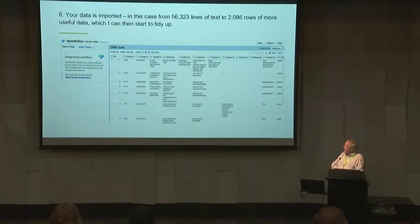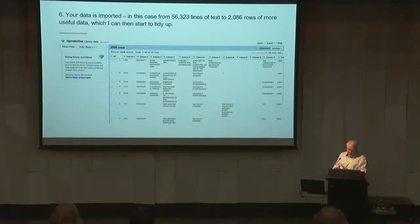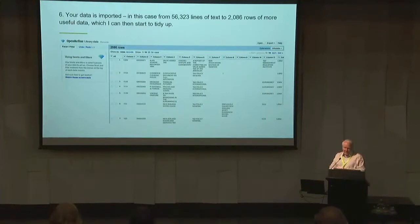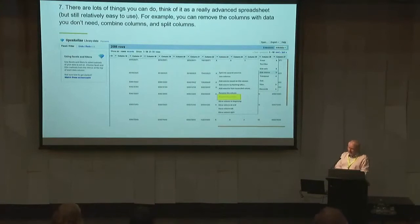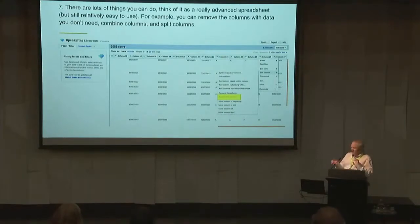We've got some data in here in columns. There are a few problems with some of this data and we'll try and fix up a couple of them. Instead of manually fixing 56,323 lines into a nice spreadsheet, it did it straight away. OpenRefine works on the idea of transforming what's in the columns — you click on that column header and there are a lot of options. You can remove a column or join columns together quite nicely. You can move them around — some of the normal spreadsheet functions you might have.